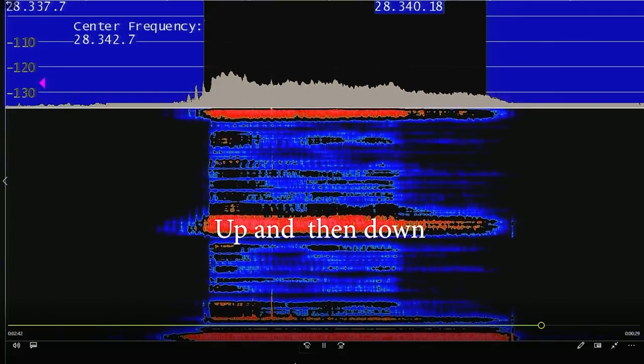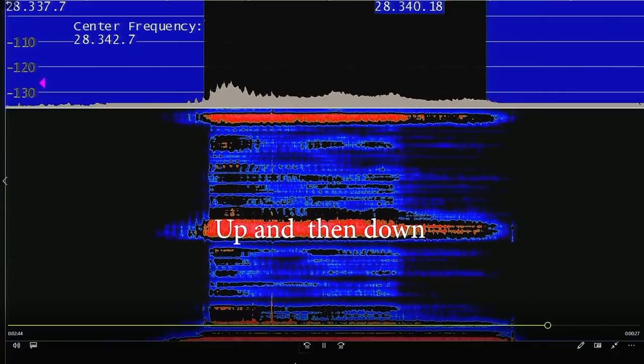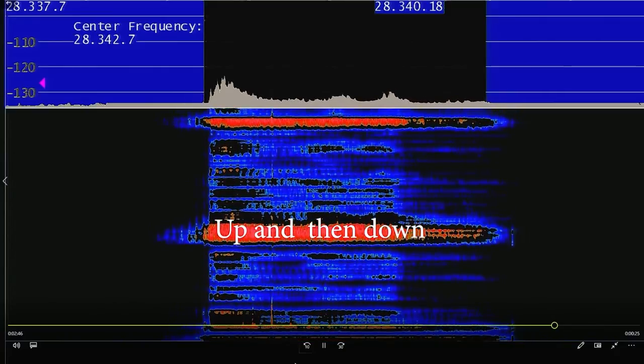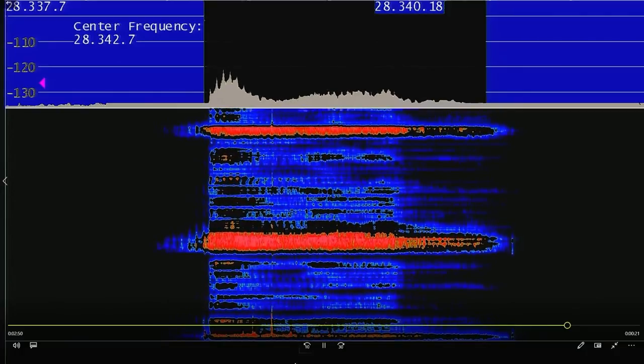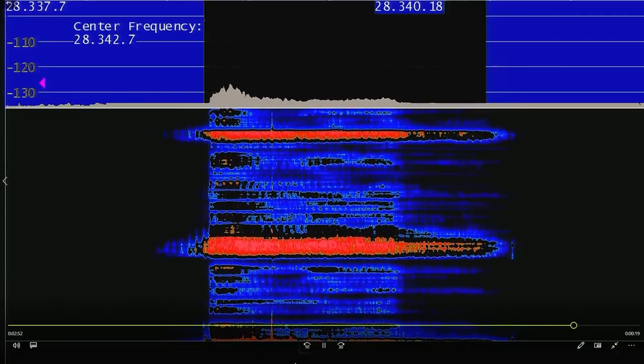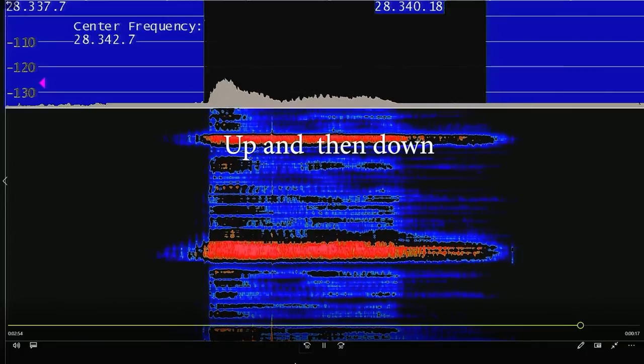So turn the processor up. There's 20 dB of processing. 1, 2, 3, 4, 5. And you can still hear the mic gains up too high. 1, 2, 3, 4, 5.